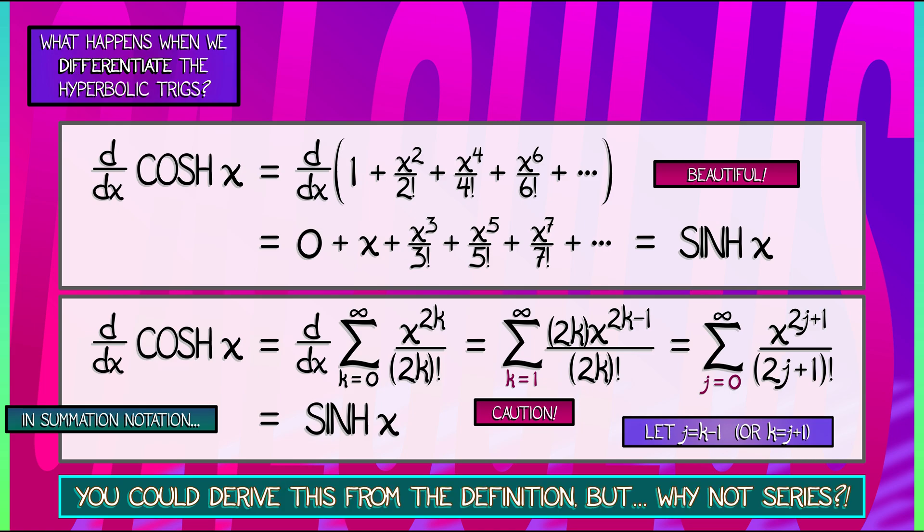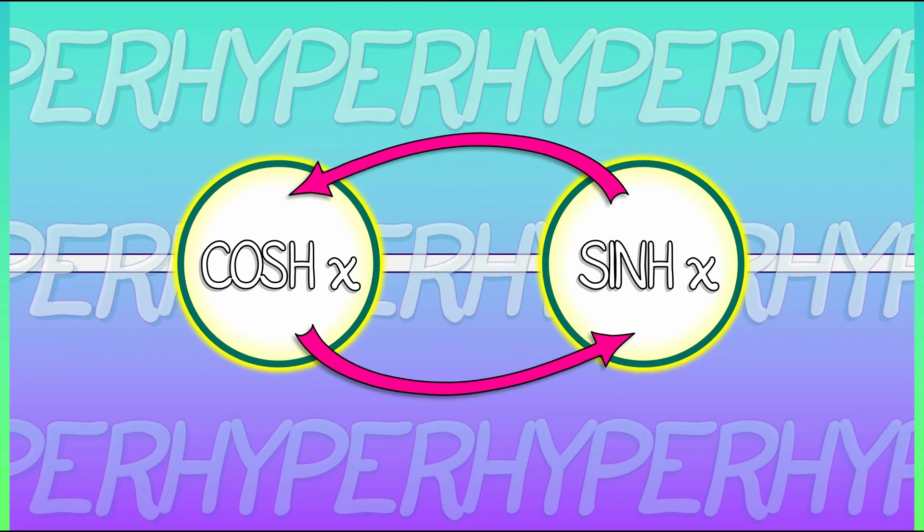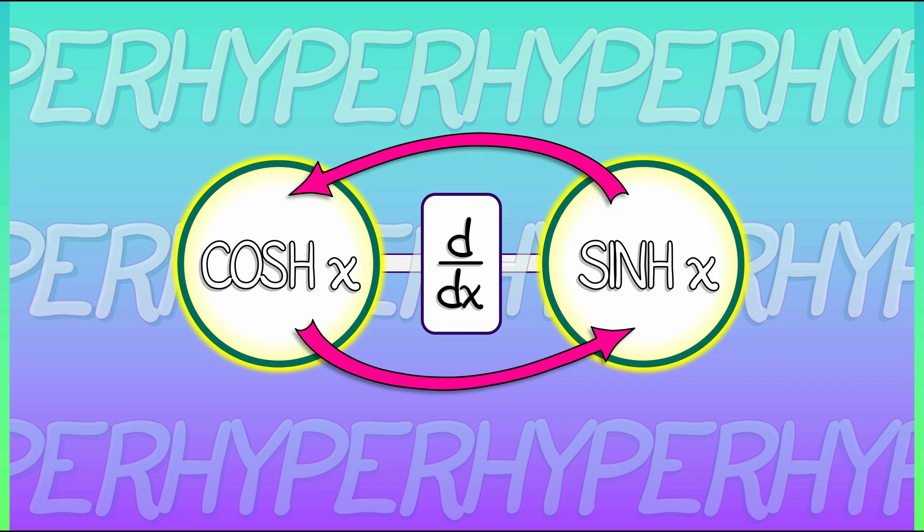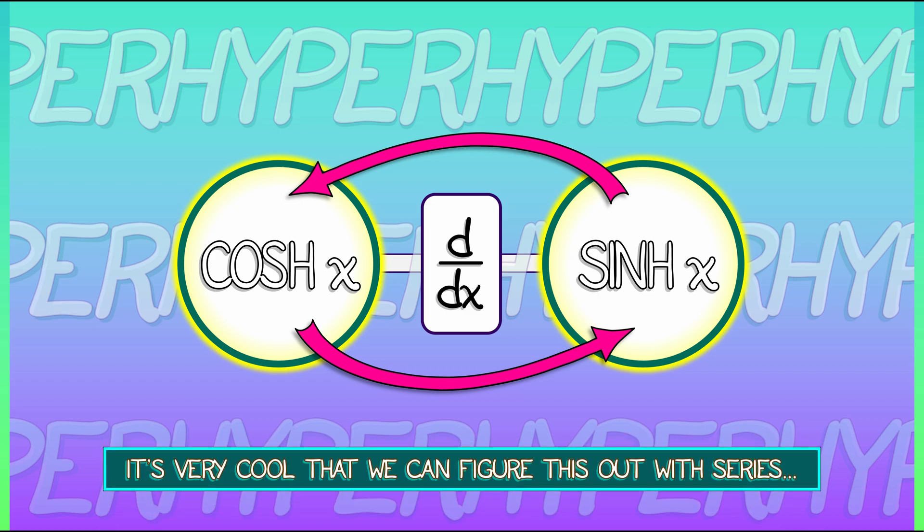And it's just super cool that we've got these hyperbolic trig functions. We've got sinh. We've got cosh. And the derivative of cosh is sinh. The derivative of sinh is cosh. That is very cool. And it's very cool that we could figure this out just using series.